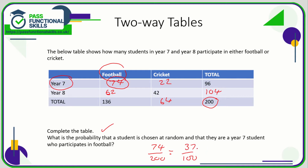The question hasn't stated how we should give our answer, but 37 out of 100 would be fine. If it asked for a decimal, then just divide top by bottom — so that'd be 0.37, or even as a percentage, 37%.